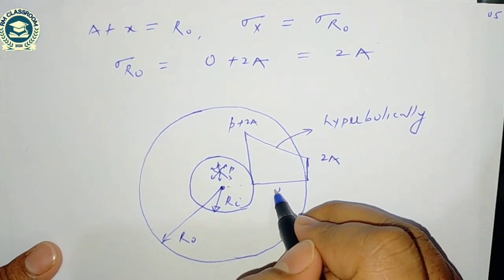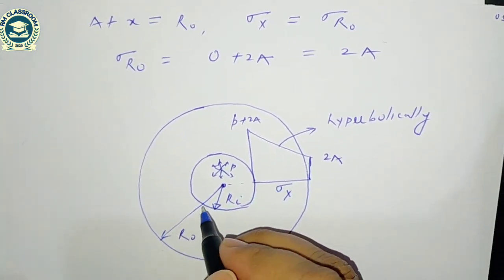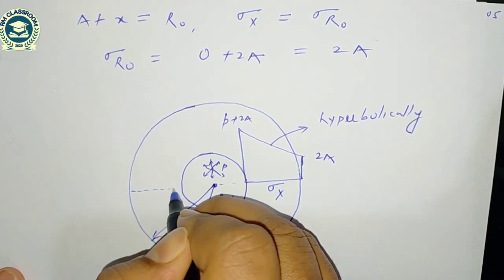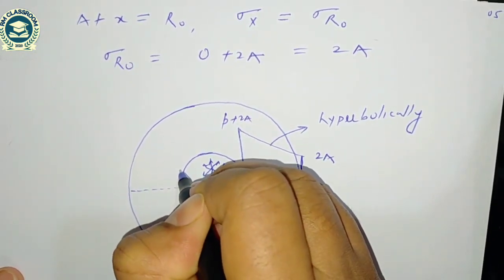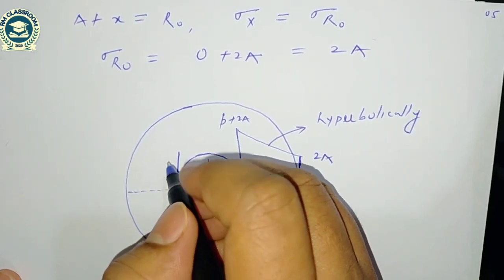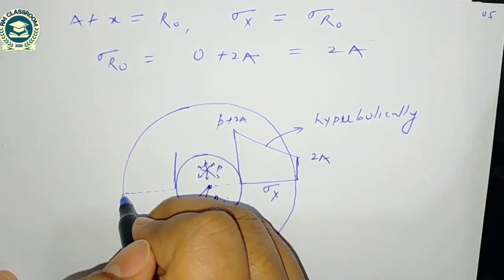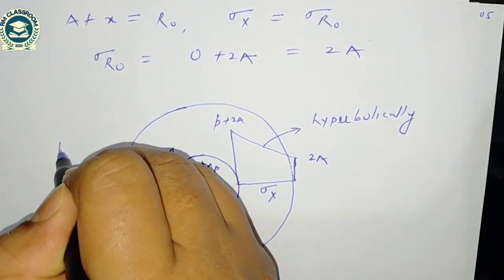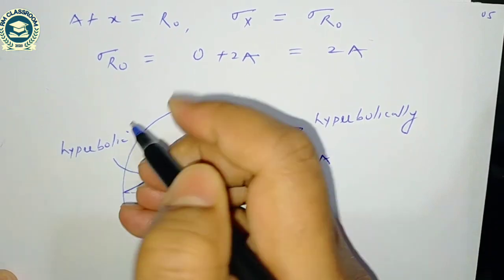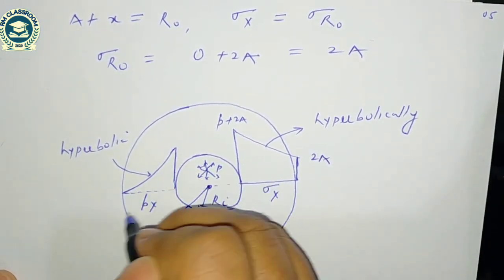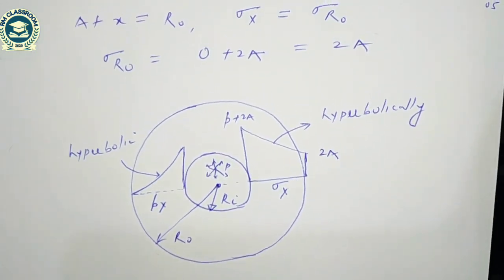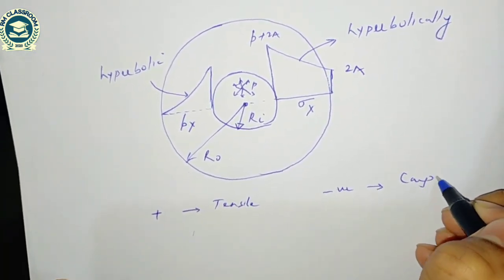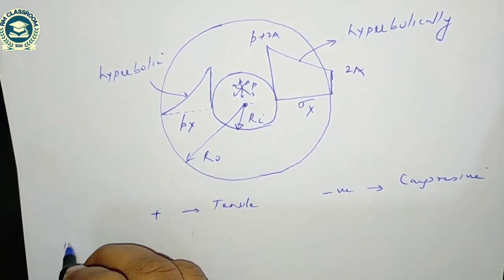Drawing the distribution of radial stress: at the inner surface the value is maximum, and the distribution is hyperbolic. Here positive represents tensile and negative represents compressive.